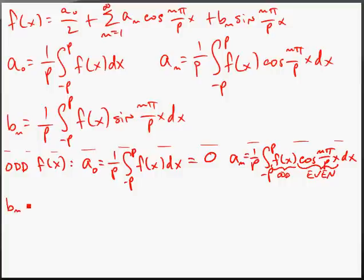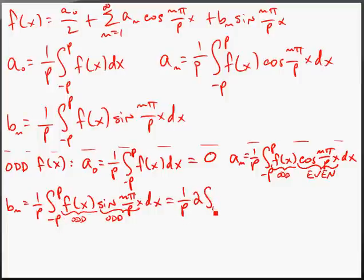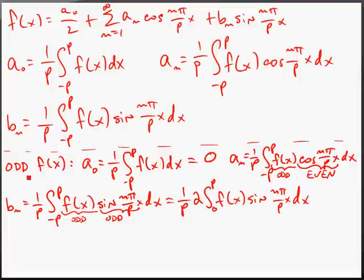The only surviving coefficient is bₙ = (1/P) ∫₋ₚᴾ f(x) sin(nπx/P) dx. This does not go to zero because f(x) is odd and sine is also odd, and the product of two odd functions is an even function. By the definition of an even function, the integral from -P to P equals two times the integral from 0 to P, giving bₙ = (2/P) ∫₀ᴾ f(x) sin(nπx/P) dx.